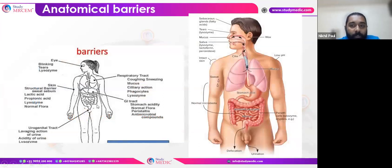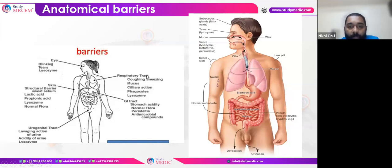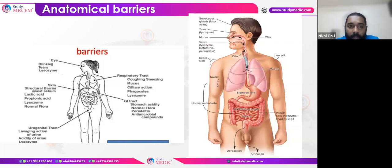We have a few anatomical barriers of infection. In the eyes, you have constant blinking, tears, and lysozyme. Skin is an effective barrier — you get infected when there is a break in the structural barrier. You also have secretions like sebum, which has lactic acid and propionic acid, acting as chemical barriers. The urogenital tract is frequently flushed by lavaging action and the acidity of urine. In the respiratory tract, we have mucociliary clearance, and in the GI tract, stomach acidity, normal flora, and frequent peristalsis promote the anatomical barrier.